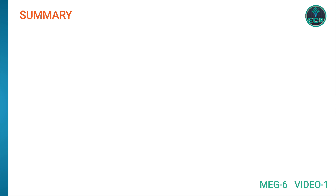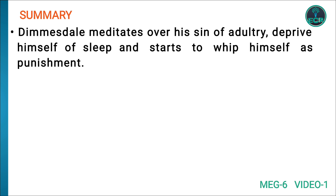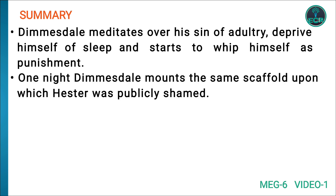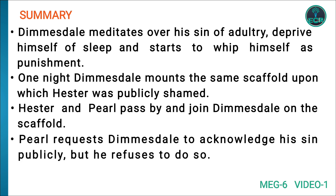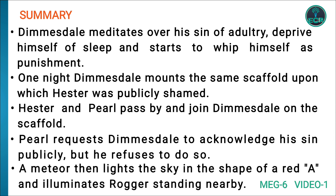Under Roger's treatment, Dimmesdale's health worsens. Dimmesdale meditates over his sin of adultery, deprives himself of sleep, and starts to whip himself as punishment. One night, Dimmesdale mounts the same scaffold upon which Hester was publicly shamed. Hester and Pearl pass by and join Dimmesdale on the scaffold. Pearl requests Dimmesdale to acknowledge his sin publicly, but he refuses to do so. A meteor then lights the sky in the shape of a red A.